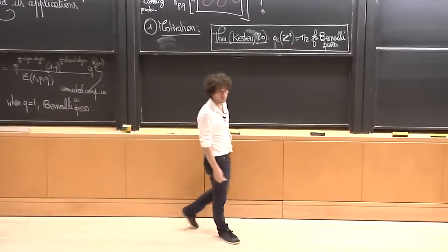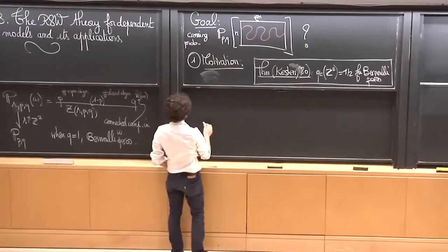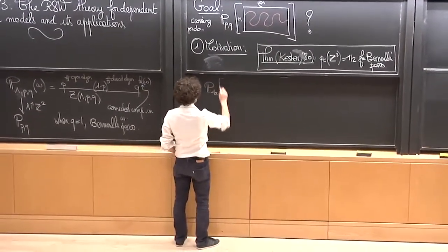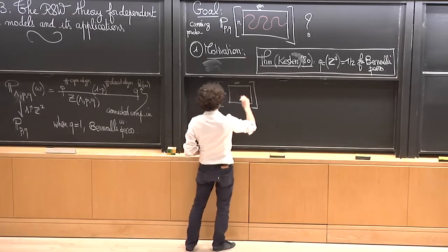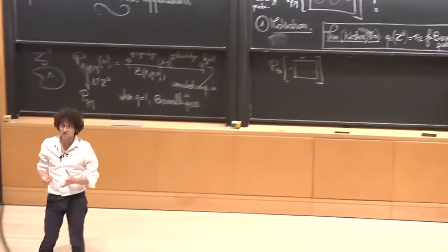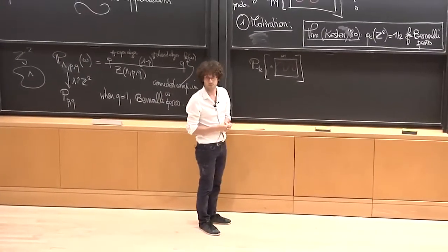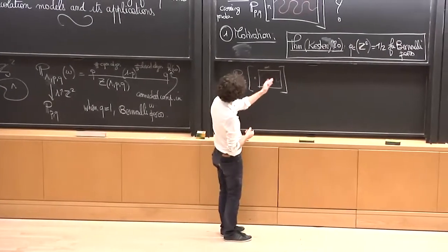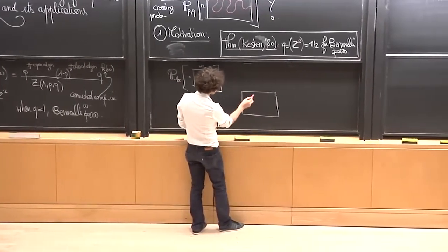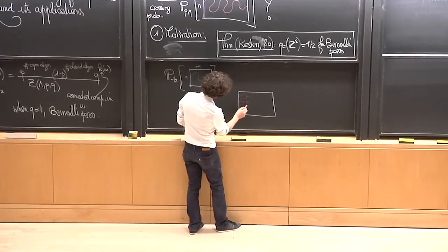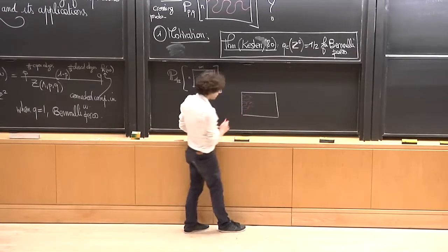What is special at one half? Let's look at the crossing probability: the probability at one half of crossing the n by n+1 box. This probability is going to be equal to exactly one half. Why? Because if you don't have a crossing, that means you have a blocking surface — think of all the vertices connected to the left — and you have a blocking surface of edges that are closed.